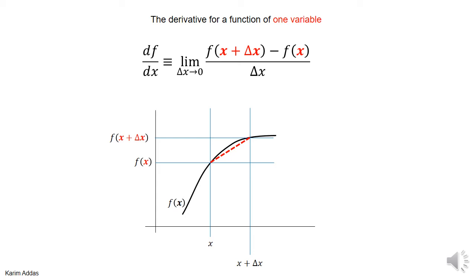In these slides we want to define what a partial derivative is, but before we do that let's go back to the regular derivative of a function of one variable. The differentiation of a function of one variable with respect to x is defined as the limit when delta x goes to 0 of the value of the function at a nearby point x plus delta x minus the value of the function at x, divided by delta x.